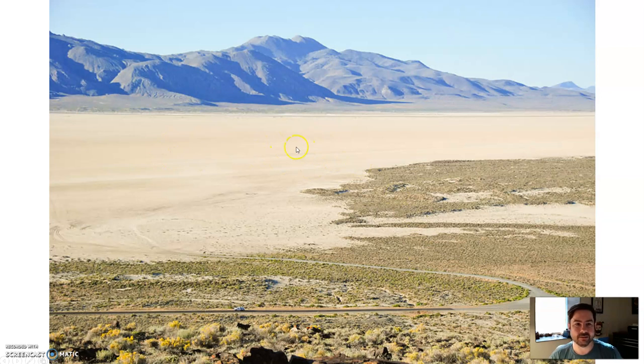Here's an example of a playa here. Streams that would flow off here, these are probably alluvial fans overlapping, creating a bajada. But that water, if it pools up here, creates a shallow little lake. If the water evaporates, it leaves behind the sediment, creating this flat playa.